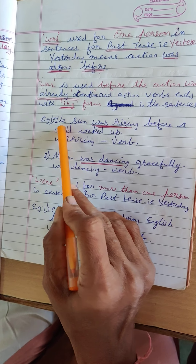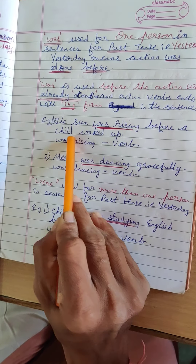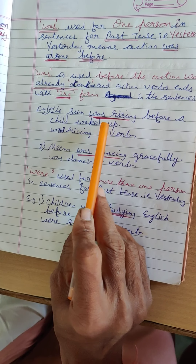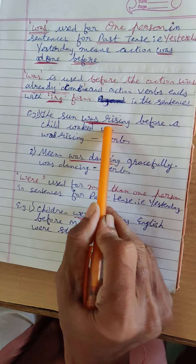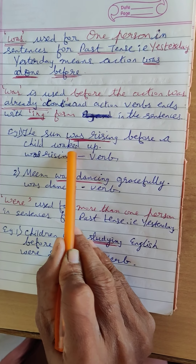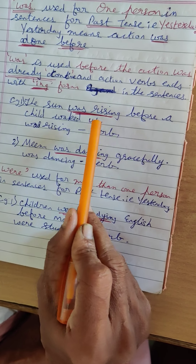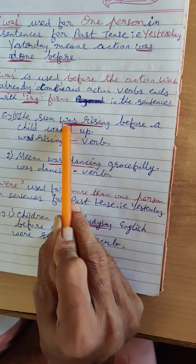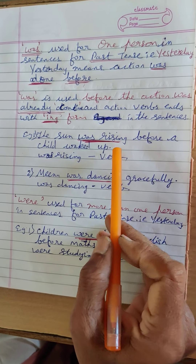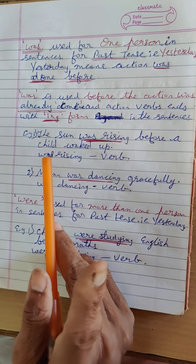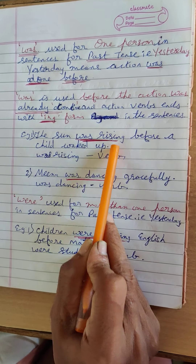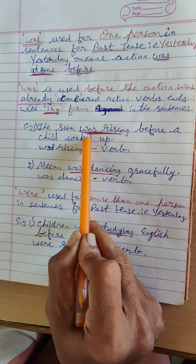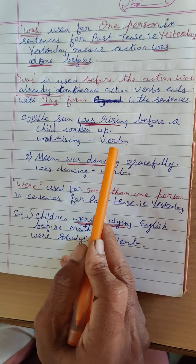Here are some examples. The sun was rising before a child woke up. What is the action word done by the sun? Rising. Sun was rising before a child woke up. So, one se pehle — child ke utne se pehle sun rise ho gaya hai. The sun was rising — was is a past form, and how many suns are there? Only one sun. So we use 'was rising'. Was rising is a verb.